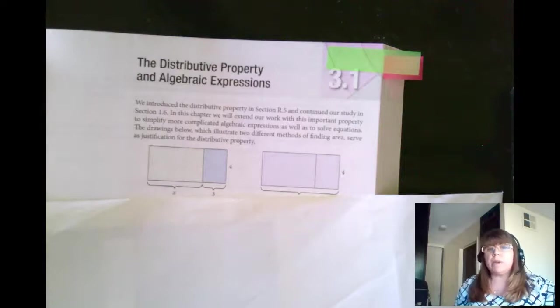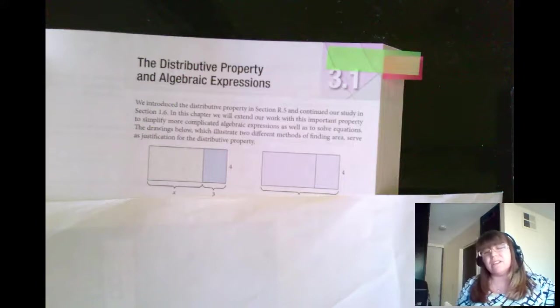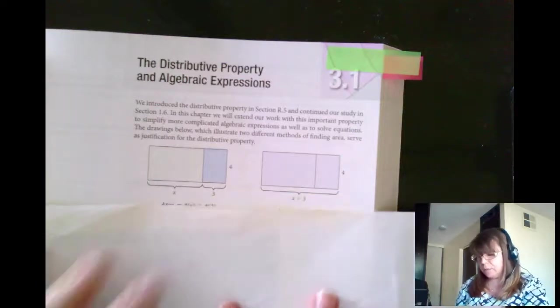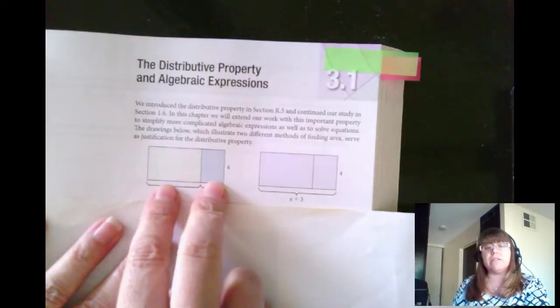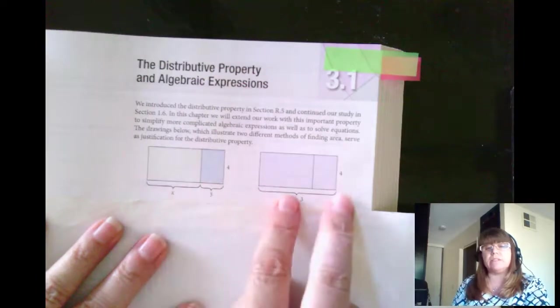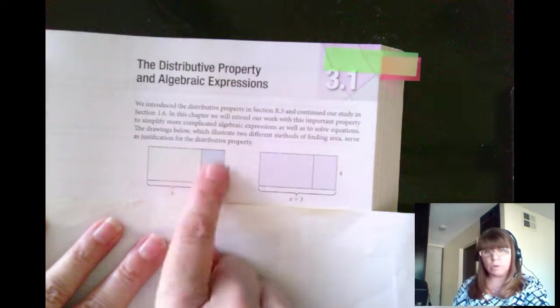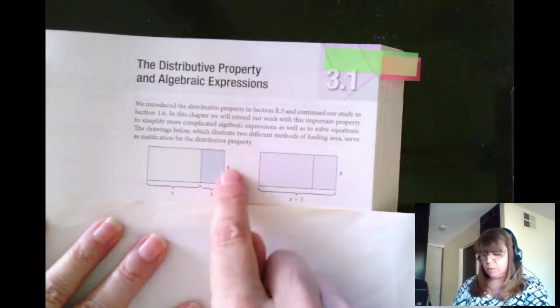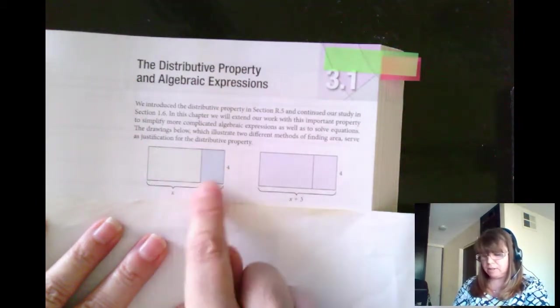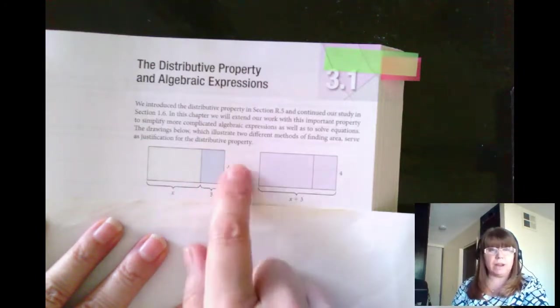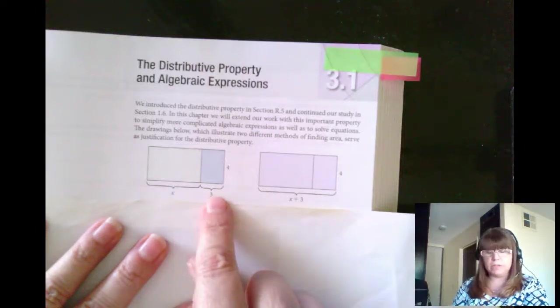Welcome to lecture 3.1. We're going to talk about the distributive property and algebraic expressions. Back in class, I did explain the distributive property using two rectangles. If we have two rectangles together, I can either do each rectangle separate to find out the whole entire area. So that would be 4 times x plus the other little rectangle, which would be 4 times 3, giving me 4x plus 12.